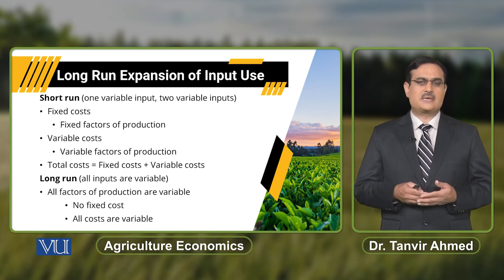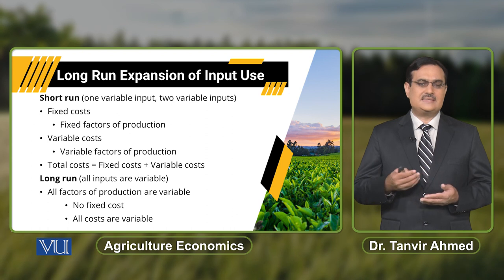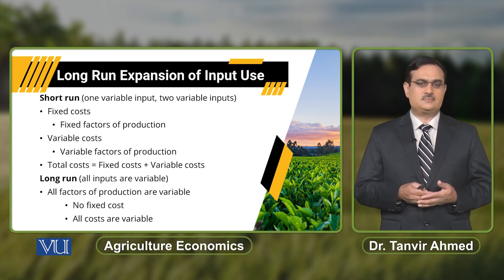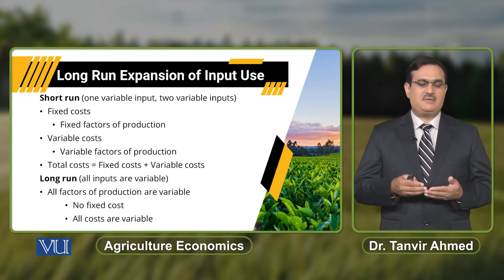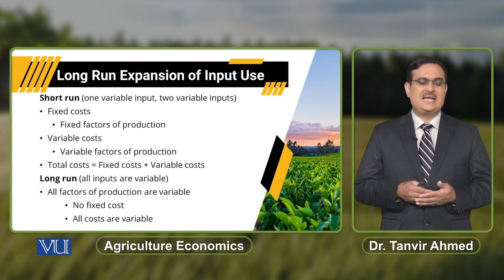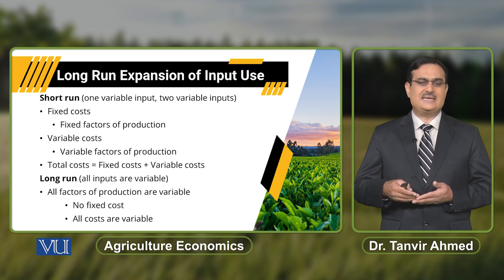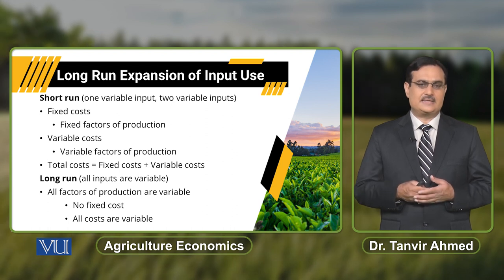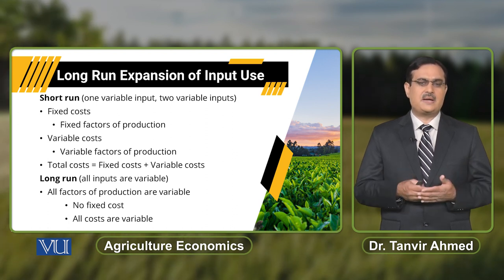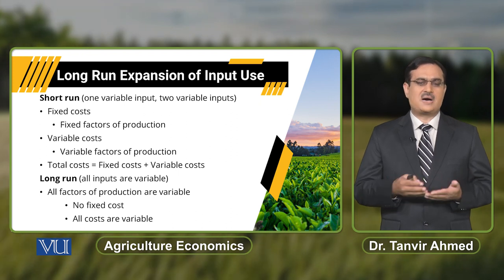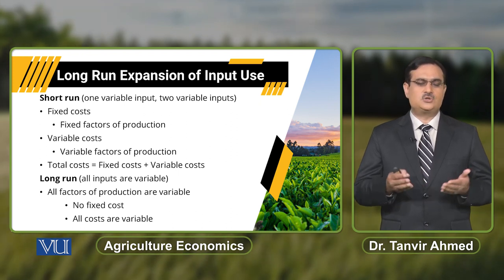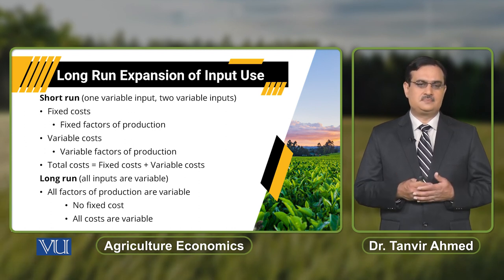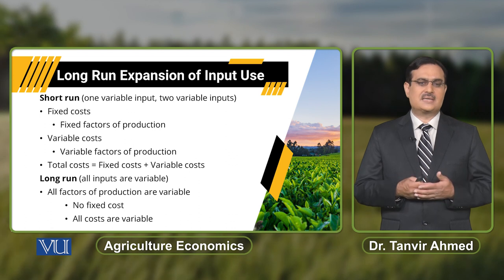When we talk about variable cost, this cost is equal to zero if a farmer is not making any production. Initially, when there is an increase in output, variable cost increases at a decreasing rate. But at a later stage, variable cost increases at an increasing rate.